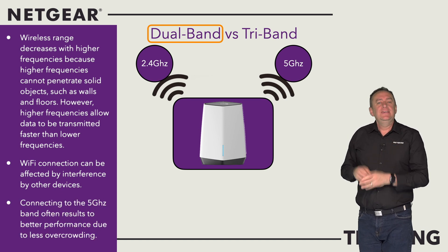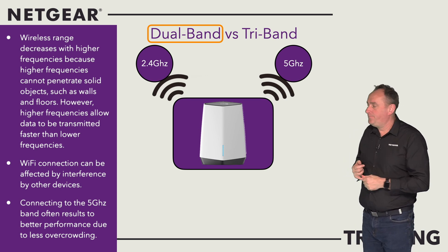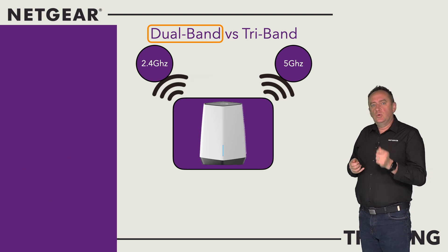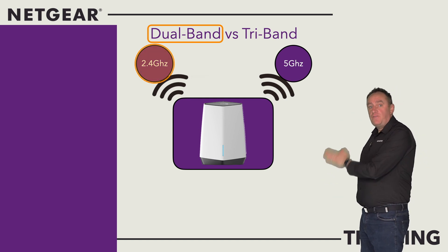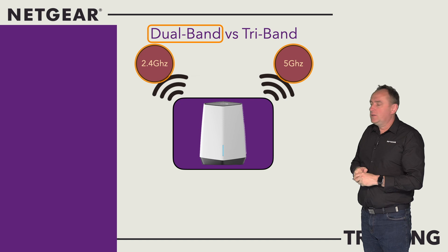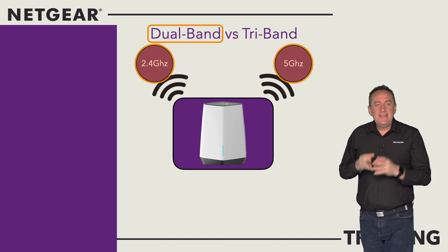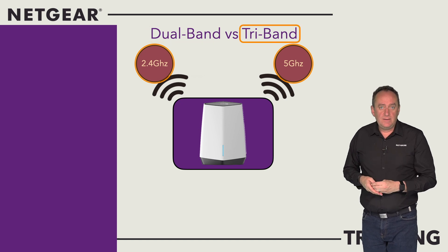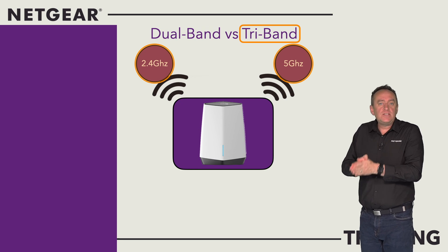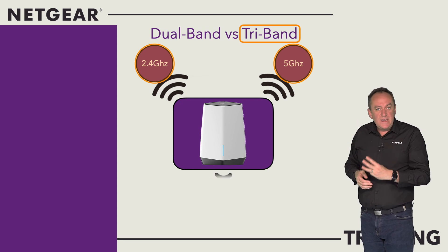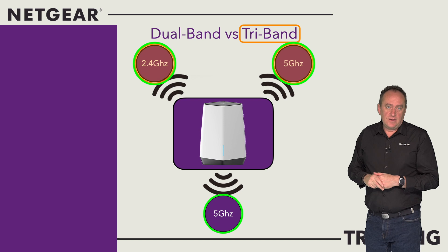However, in today's technology it's rare to find wireless devices which are only compatible with 2.4GHz. A standard dual band wireless network provides one 2.4GHz band and one 5GHz band for hosts to connect to. However, in order to meet the connectivity and performance demands of today's technology, Netgear have introduced tri-band. This is Wi-Fi which is able to deliver higher throughput by combining Wi-Fi speeds through not two, but three dedicated Wi-Fi bands: a single 2.4GHz band plus two 5GHz bands.